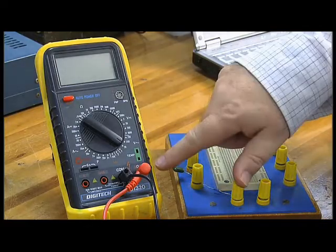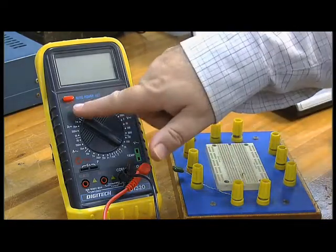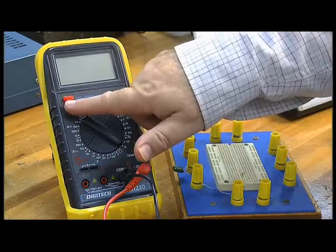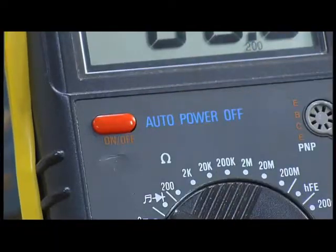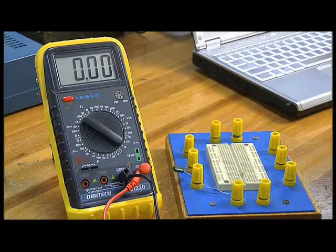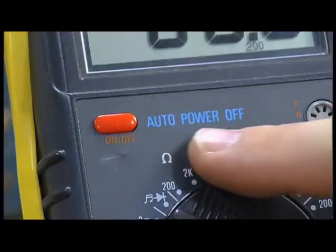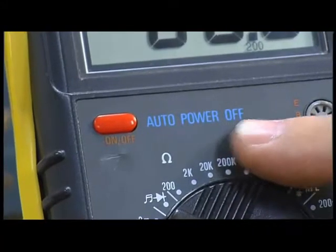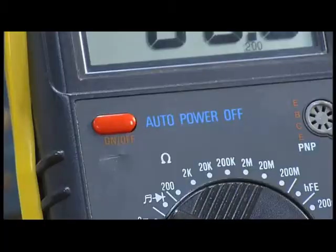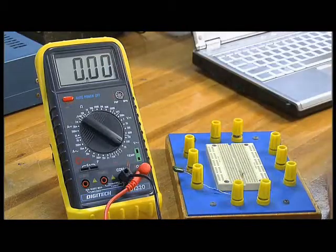So the first thing we need to know about our multimeter is how to turn it on. There's a red button here, just a toggle switch. Press the red button and the device turns on. It also has the feature in this particular model that it doesn't need to be turned off again. It will auto turn off, which saves you having to worry about that.